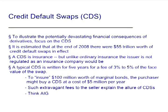To illustrate the potentially devastating financial consequences of derivatives, I'm going to focus on one form called a credit default swap. There were $55 trillion of these at the end of 2008. A credit default swap is insurance, but unlike ordinary insurance, the issuer is not regulated like an insurance company would be. A typical credit default swap is written for five years for a fee of 3% to 5% of the notional value. So to insure $100 million worth of marginal bonds that a pension fund might want to buy but were below investment grade, they might buy a credit default swap for an annual premium of $5 million, or $25 million over the life of the contract — which explains why people were attracted to them.